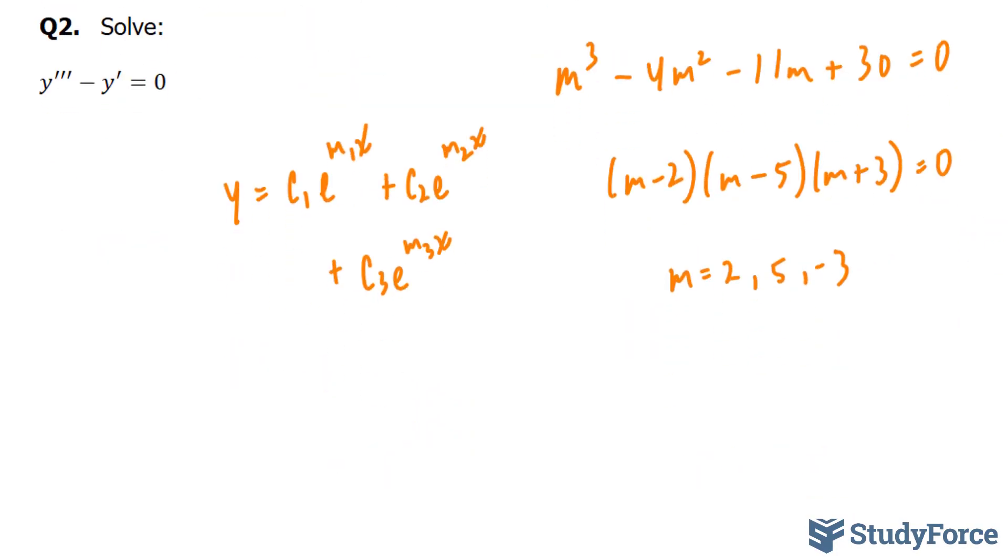I'll substitute these m's and we're done. Y is equal to c1 e to the power of 2x plus c2 times e to the power of 5x plus c3 e to the power of negative 3x. That's the answer to question number one.